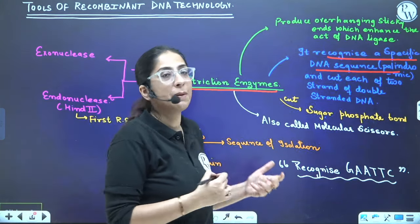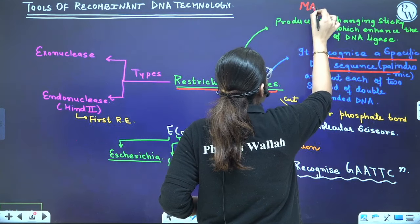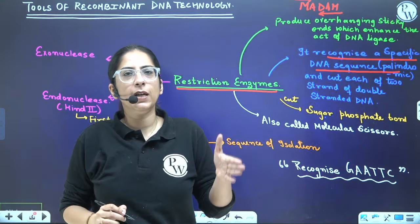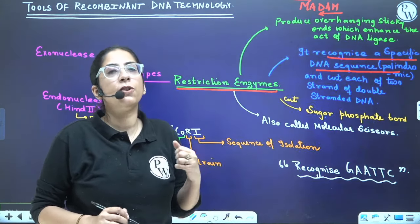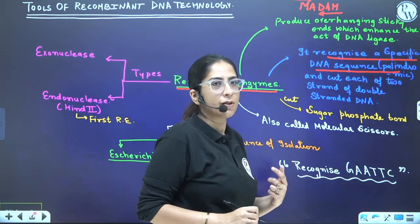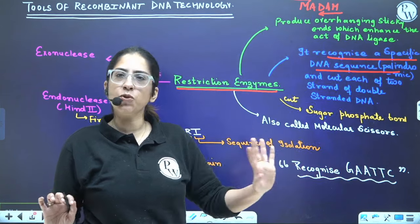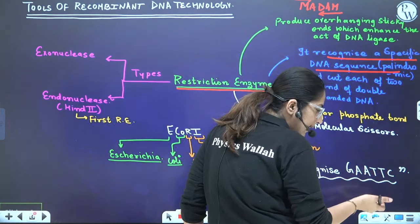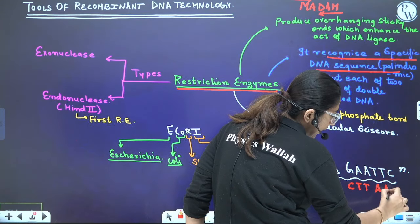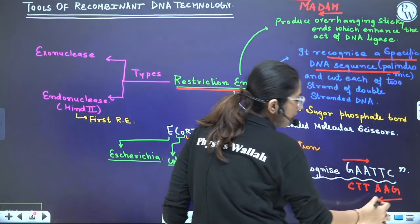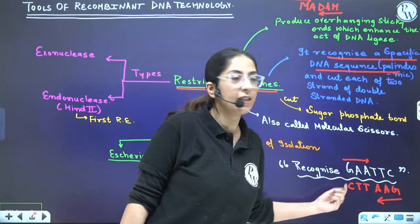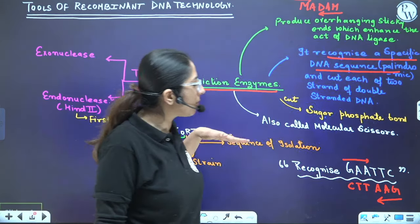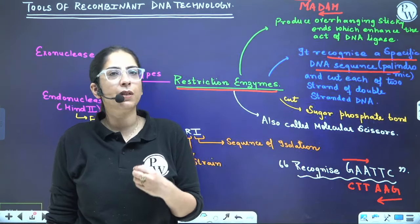A palindromic sequence is like the word 'madam' — if you read it from this side or that side, the letters are the same. Similarly, the DNA palindromic sequence GAATTC — on the complementary strand there will be CTTAAG. If you read from 3' to 5' or 5' to 3' direction, you get a similar sequence. Another important feature: they always cut double-stranded DNA, specifically the sugar-phosphate backbone — a very important one-mark question.